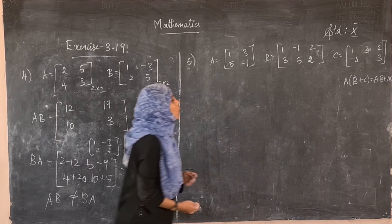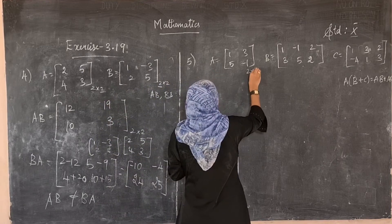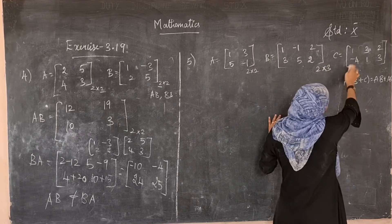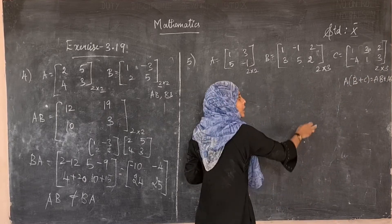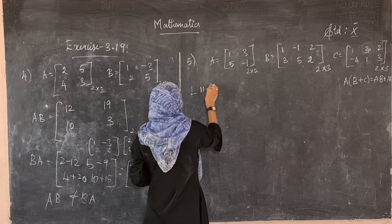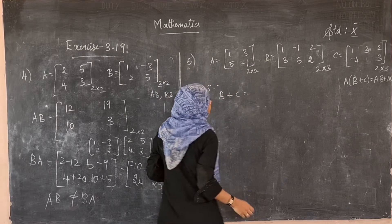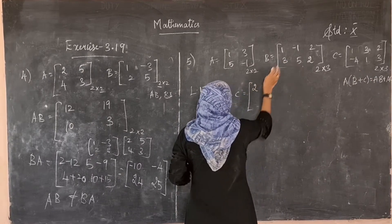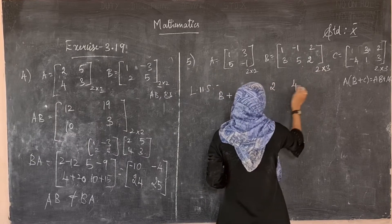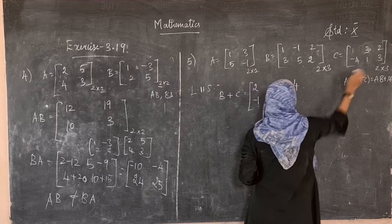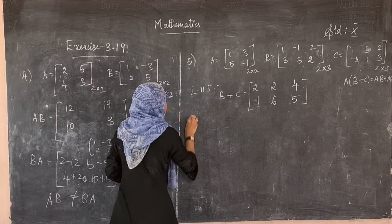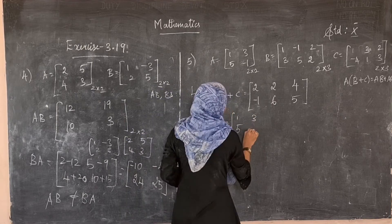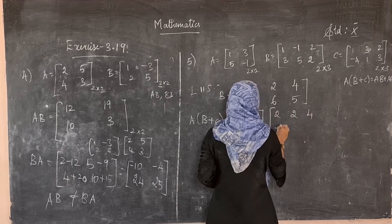For the LHS, first compute B+C: since both are of the same order 2×3, addition is possible. B+C = [1+1, −1+3, 2+2; 3+(−4), 5+1, 2+3] = [2, 2, 4; −1, 6, 5].